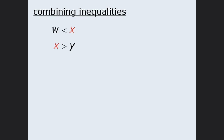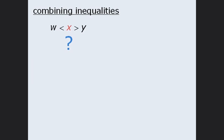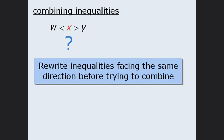Let's examine another example. Notice that we once again have x in both inequalities. If we line up the x's and combine the two inequalities using x as the common term, we get a compound inequality where it is difficult to make conclusions about the relationship between w and y. When combining inequalities, it is useful to first rewrite them so that they are facing the same direction. Taking the bottom inequality and rewriting it as y is less than x, we can see that both w and y are less than x — so we cannot combine them into a compound inequality, making it impossible to compare the values of w and y.